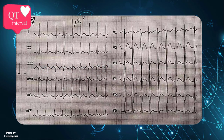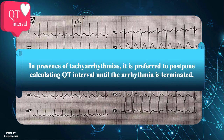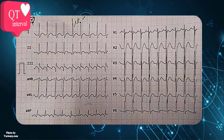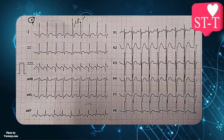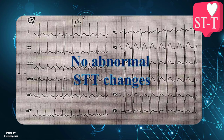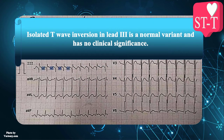Afterwards, we should calculate QT interval. Note that during tachyarrhythmias, measurement of QT interval is very difficult and time-consuming, so it's preferred to postpone calculating QT interval until the arrhythmia is terminated. The last thing in examining wave morphologies and intervals is ST-segment and T-wave changes. Fortunately, there is no obvious abnormal ST-segment deviation or T-wave inversion in this strip, so both ST-segment and T-wave are generally normal. Note that isolated T-wave inversion in lead 3 is a normal variant and has no clinical significance.